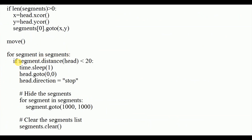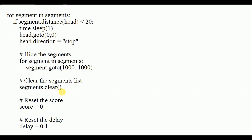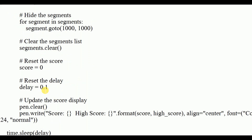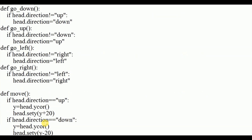For self-collision: for each segment in segments, if the distance between the segment and the head is less than 20, the game terminates. time.sleep() pauses, then the head returns to (0, 0), all segments move to (1000, 1000) and are cleared, score resets to 0, delay resets to 0.1, and the score display is rewritten with the current high score. Finally, time.sleep(delay) and wn.mainloop() complete the loop.